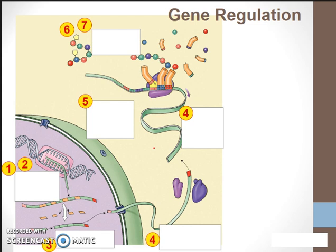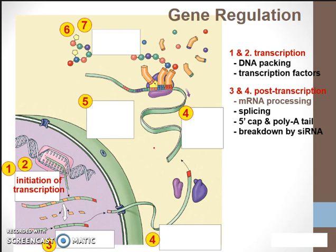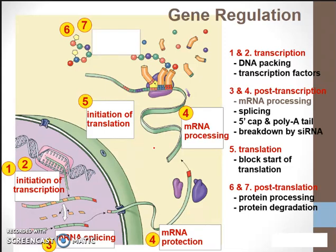In summary of gene regulation: you have chromatin — the DNA packing, whether it's heterochromatin or euchromatin — as well as transcription factors at the level of transcription. We can also regulate the final protein product post-transcriptionally through alternative RNA splicing and altering the length of our poly-A tail. In the cytoplasm, we can block the start of translation using microRNAs or, in the case of ferritin, a protein that attaches and blocks the ribosome. And lastly, post-translation, how long that protein exists in the cytoplasm can also impact the overall protein product.